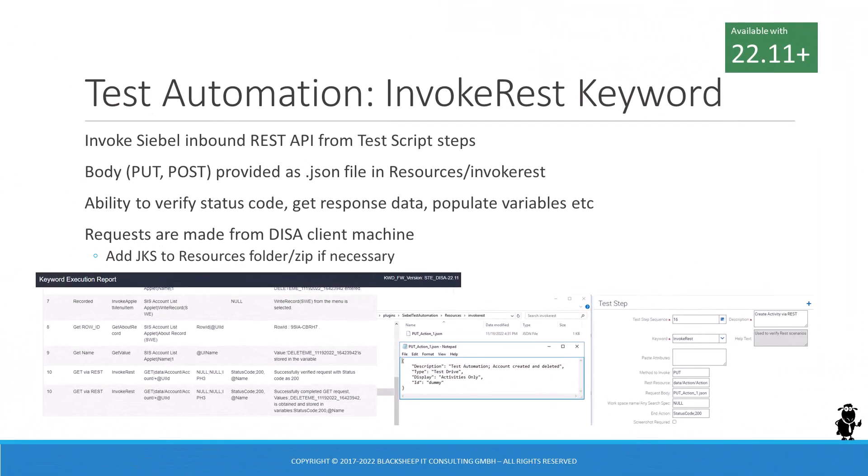In addition, test administrators can now add steps to test scripts that invoke the Siebel Inbound REST API. This can be handy to retrieve and verify test data, load and delete records used during tests, or simply test the Siebel Inbound REST API itself. The new keyword invoke REST is added by the repository upgrade utility and supports all features of the Siebel Inbound REST API, such as business object data, business services, etc. The response data can be verified and used to populate variables.